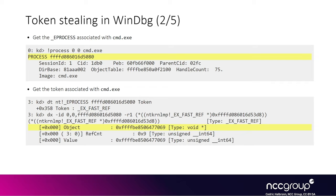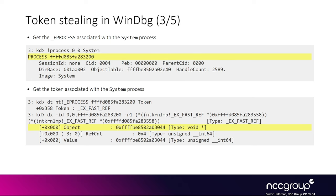The first thing we do is dump out the process information of our cmd.exe using WinDbg to get the EPROCESS address. From the EPROCESS, we can get the token structure pointer, which is effectively an EX_FAST_REF structure — a reference-counted object with an object field. In the token case, the object field points to the actual token object. We can see that our cmd.exe token pointer ends with 0x7069. We do the same for the SYSTEM process and find its token pointer ending with 0x044.